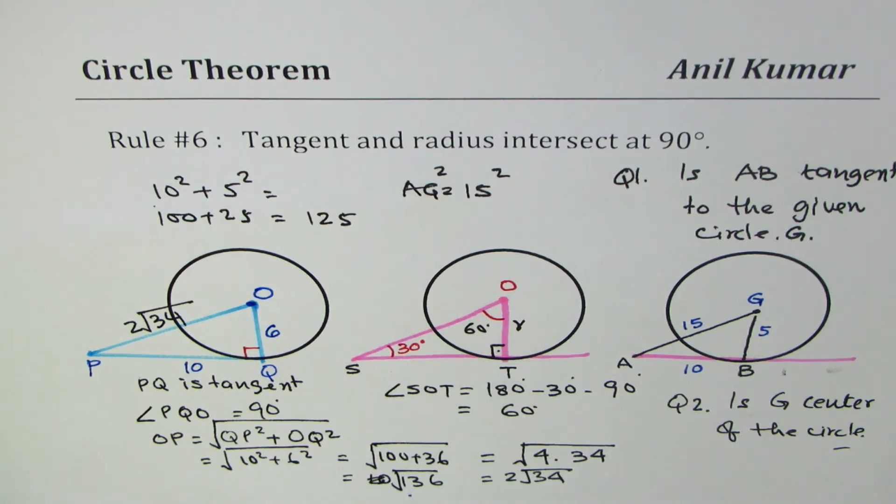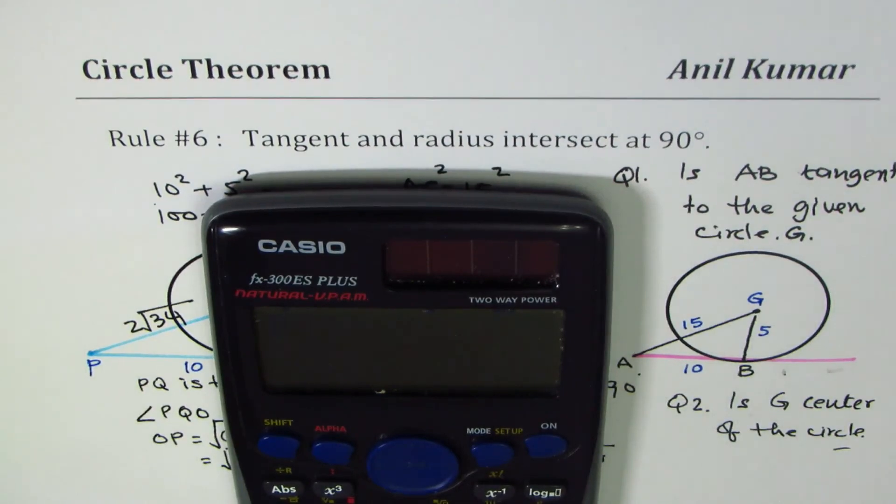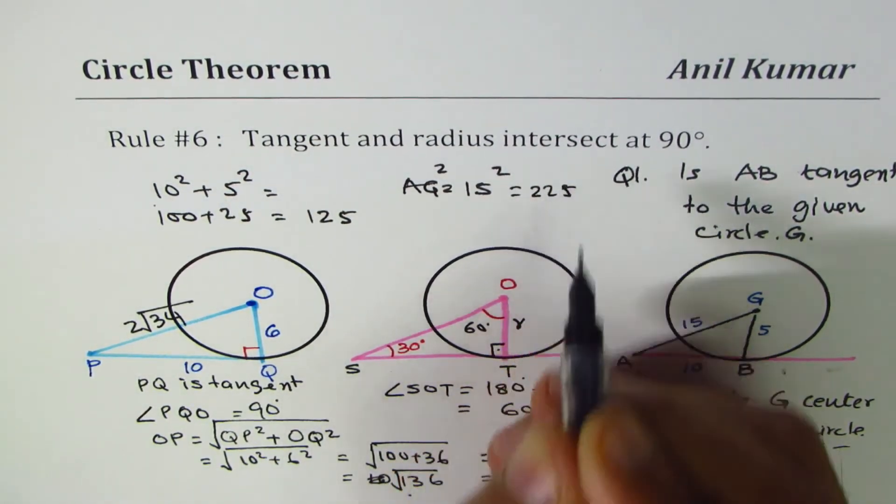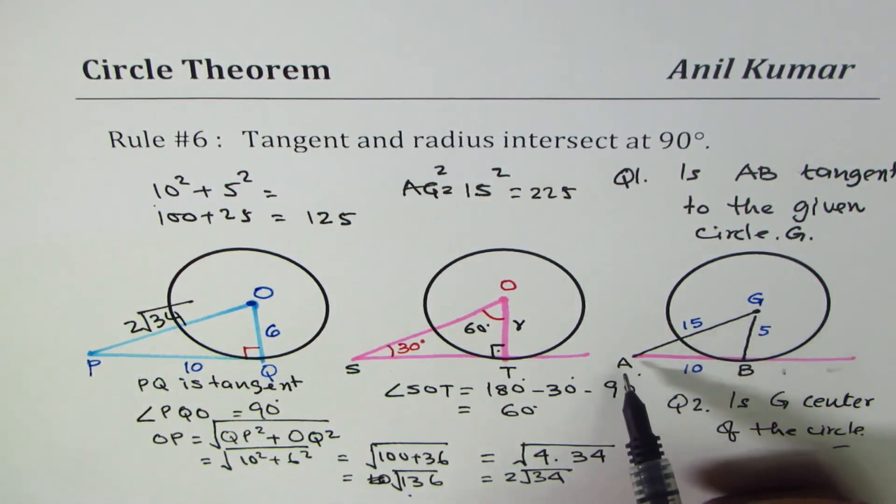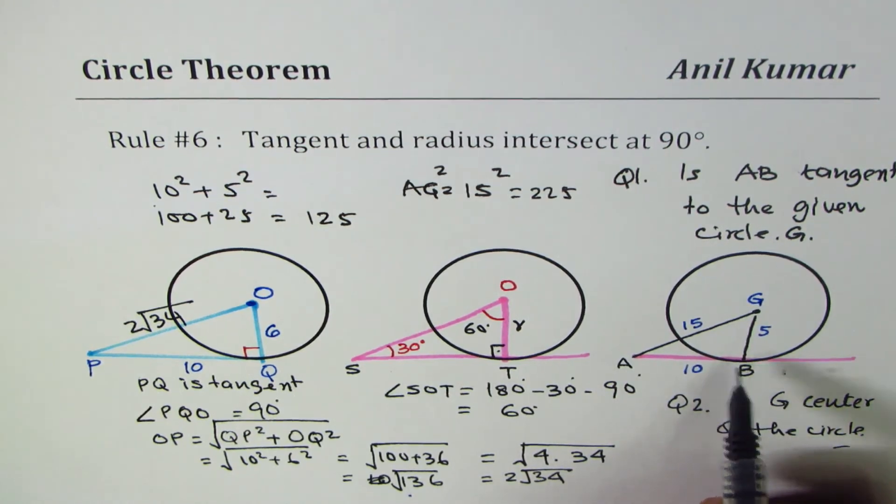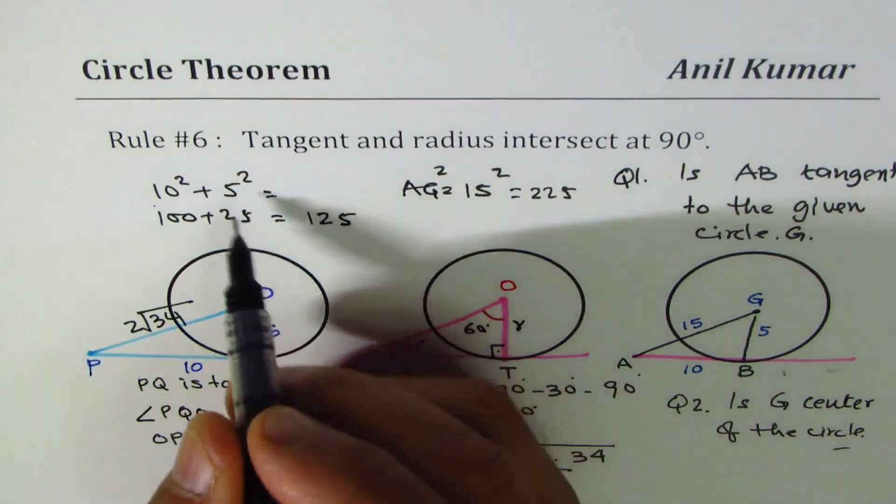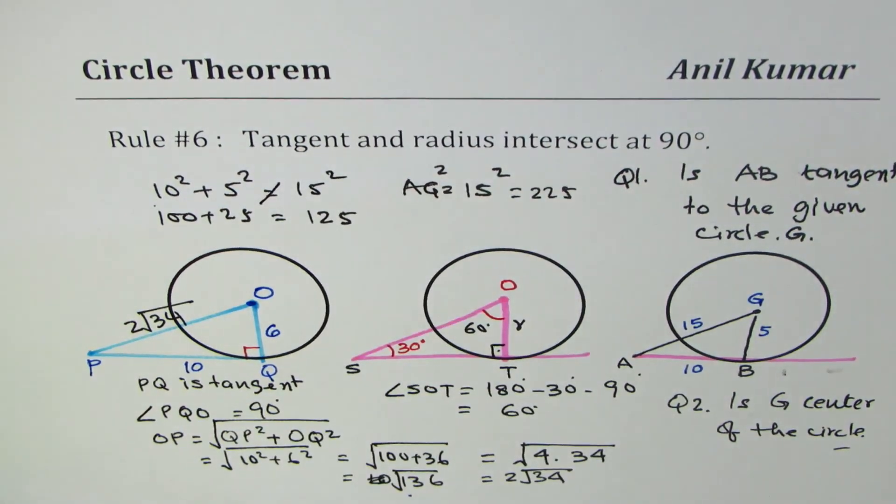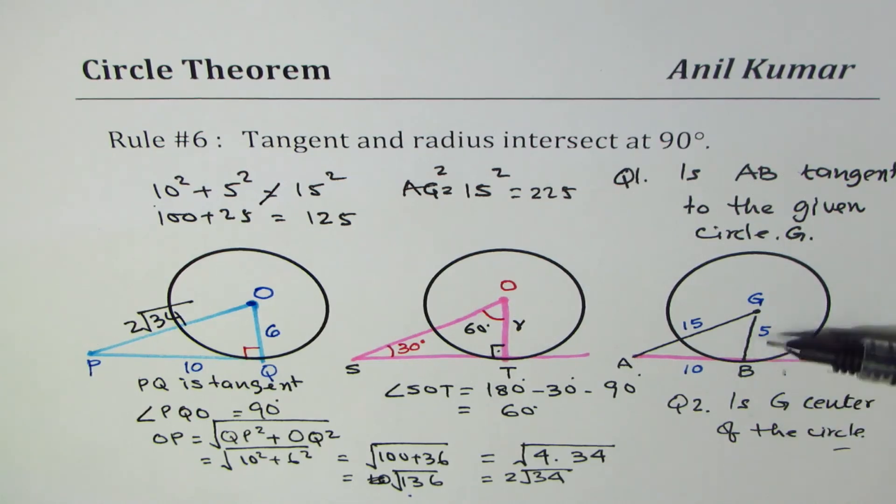15 squared is not 125. 15 squared is 225. Since AG is not the hypotenuse, the answer for either of these questions will be no. This is not equal to 15 squared. Since that is the case, either of these questions relating to that diagram, the answer will be no.